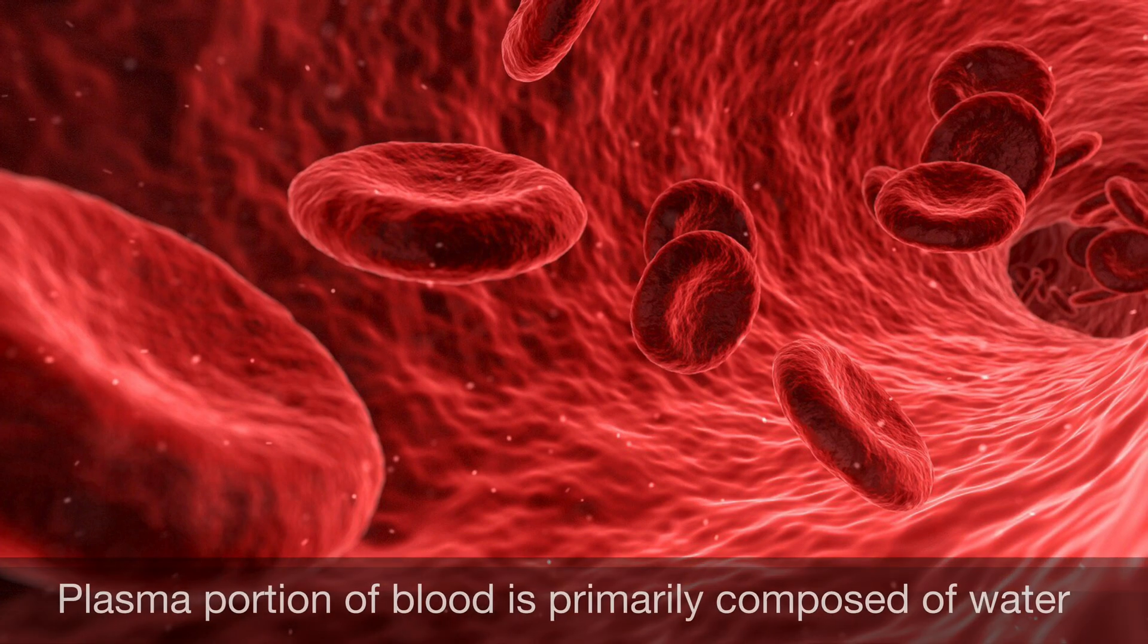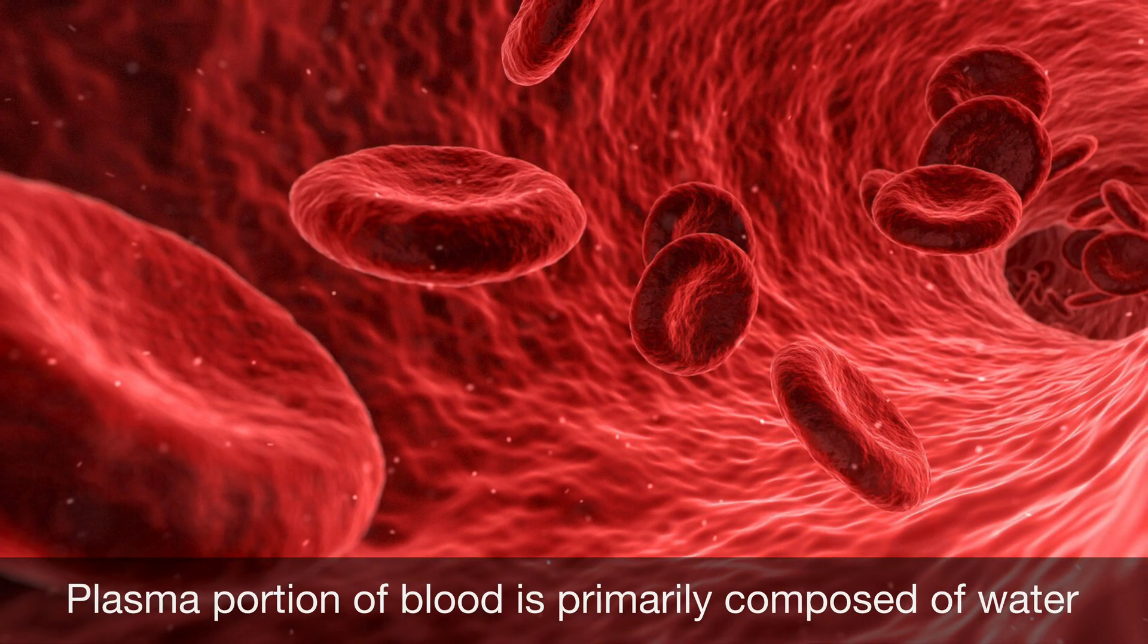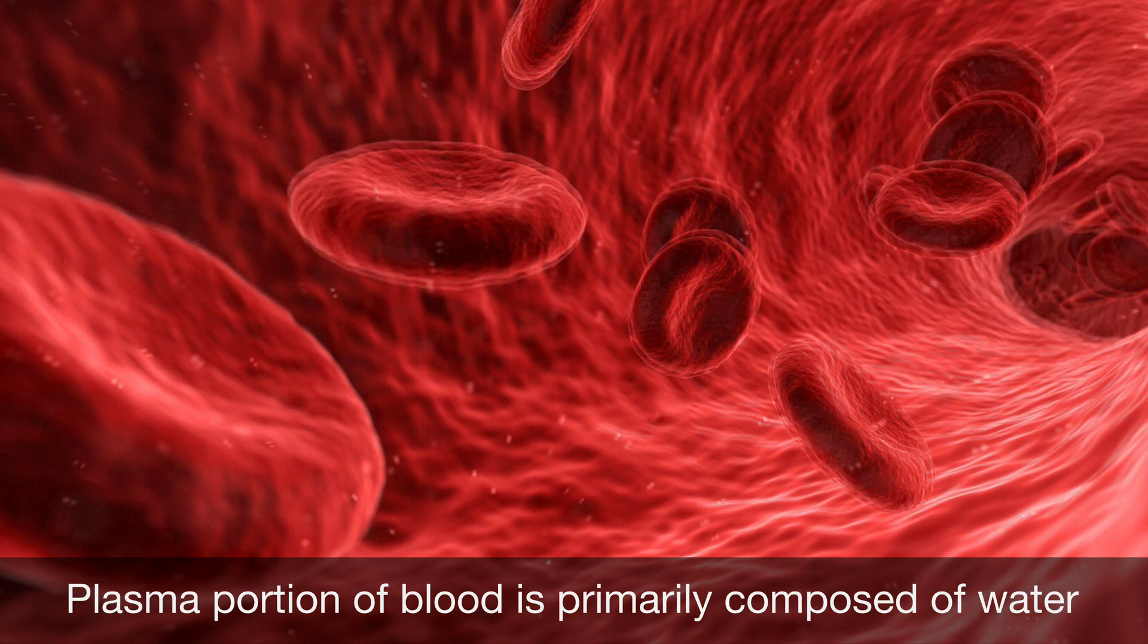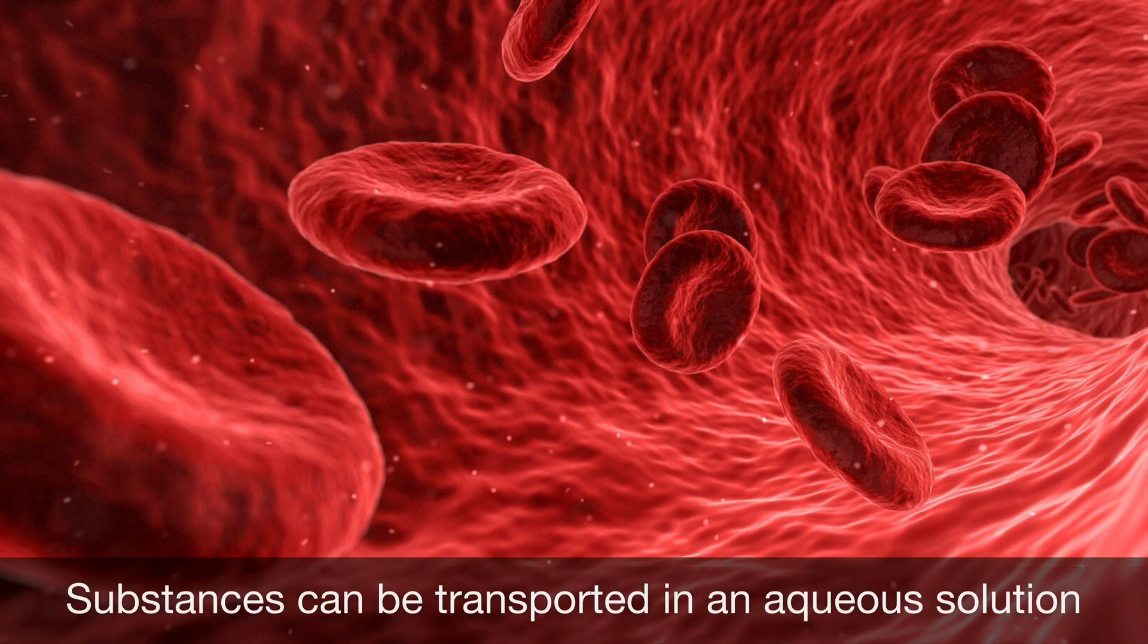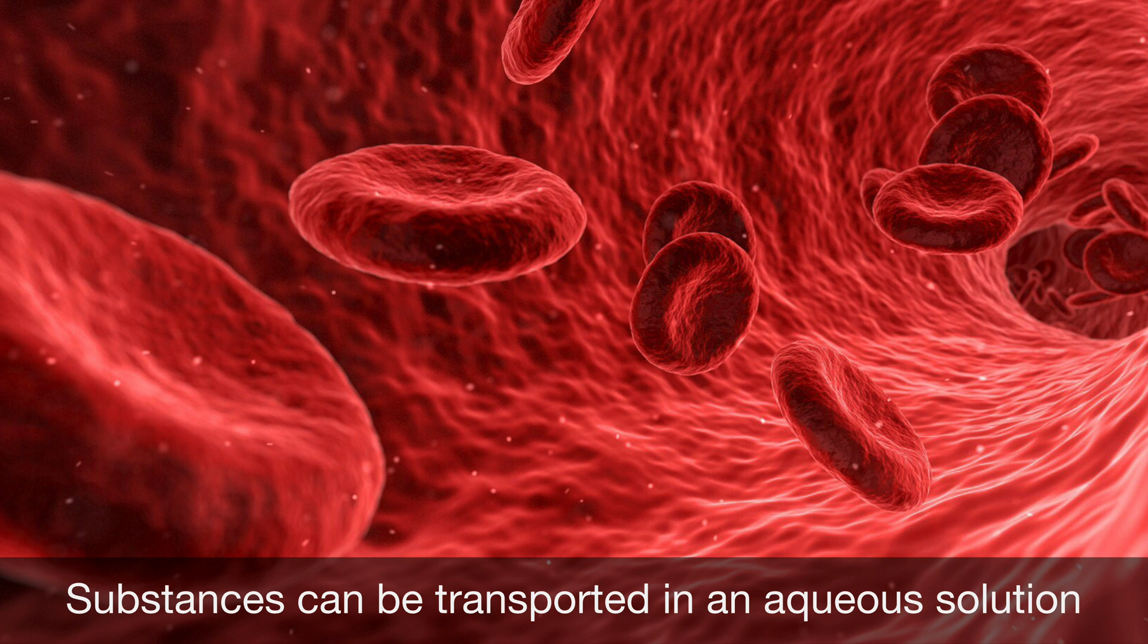Blood is a great example of a transport medium in animals, and that is because the plasma portion of the blood is primarily composed of water. This means that substances can be transported in an aqueous solution within the plasma portion of the blood.